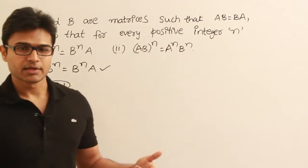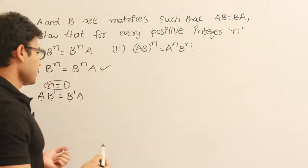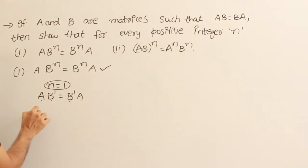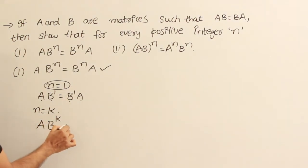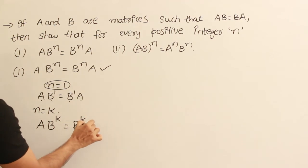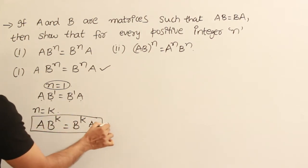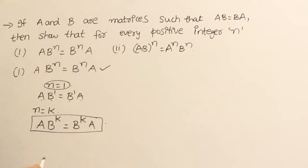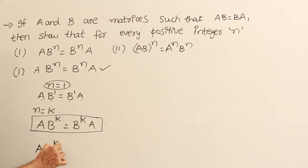Now we assume that it is true for n equal to K as well. So we are assuming that A into B power K is equal to B power K into A. And now we will try to see what happens for n equal to K plus 1, which means A into B power K plus 1.